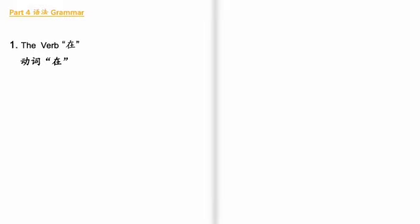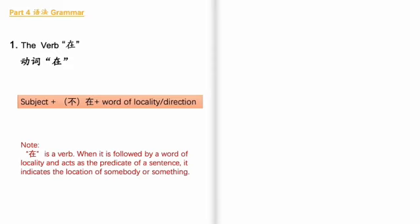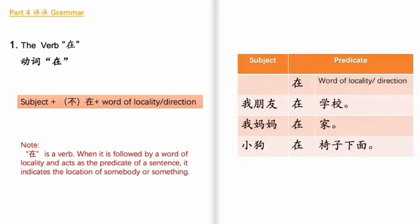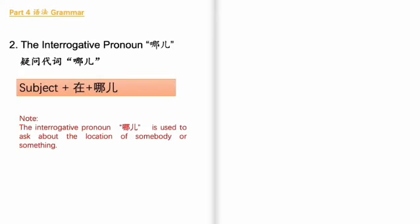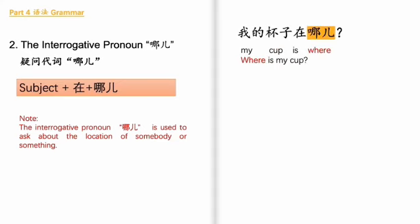Part 4, 语法, grammar. 1. The verb 在: subject plus 在 or 不在 plus word of locality or direction. Examples: 我朋友在学校. 我妈妈在家. 小狗在椅子下面. 2. The interrogative pronoun 哪儿: subject plus 在 plus 哪儿. Examples: 我的杯子在哪儿?